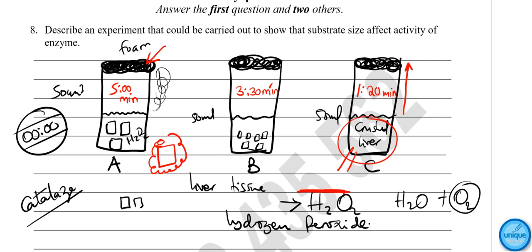Observe the time taken for the foam to reach the top of each test tube. The foam produced in test tube C — which contains crushed liver — rises faster than all other test tubes. This is because the liver was crushed into very small fine particles, providing a larger surface area per volume ratio, so enzymes were able to react faster with the hydrogen peroxide.